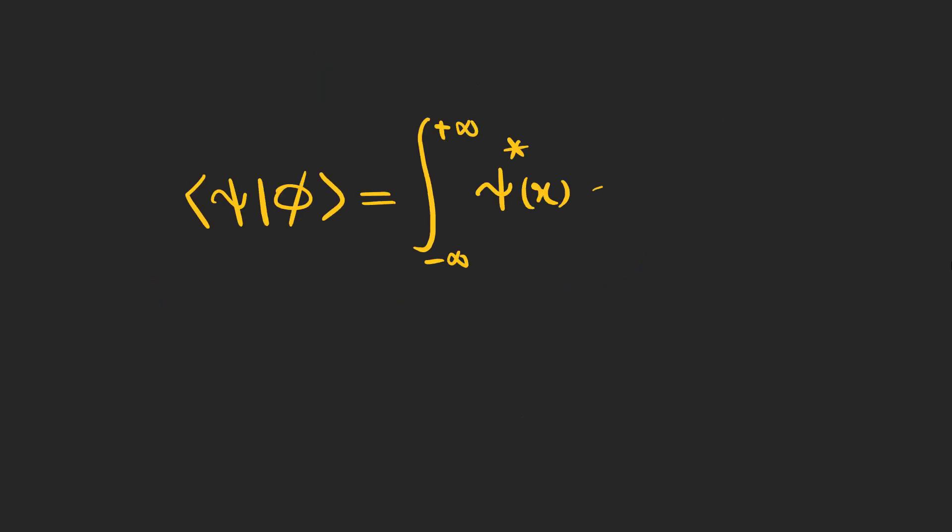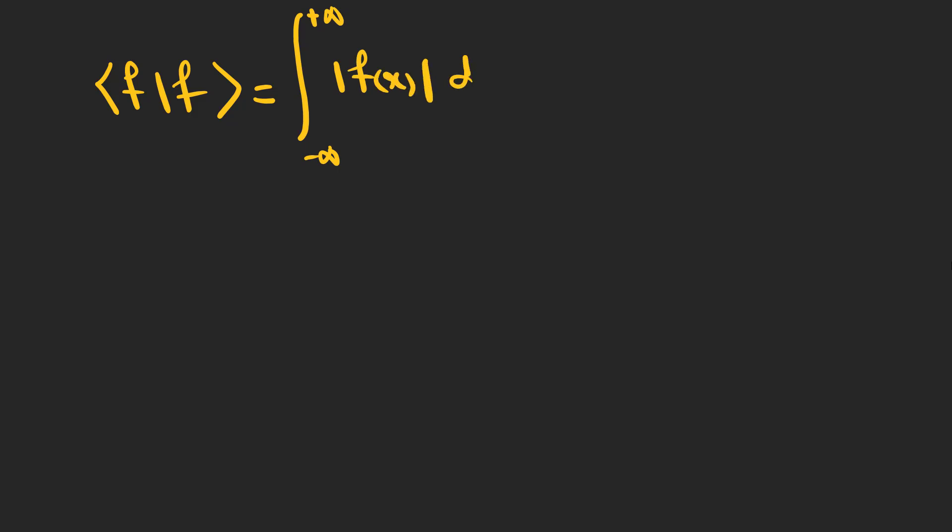The inner product of two wave functions like psi and phi can be calculated like this. And if these two functions are both square integrable, then we can make sure that the inner product exists and converges to a finite number. A function is normalized if its inner product with itself is one.